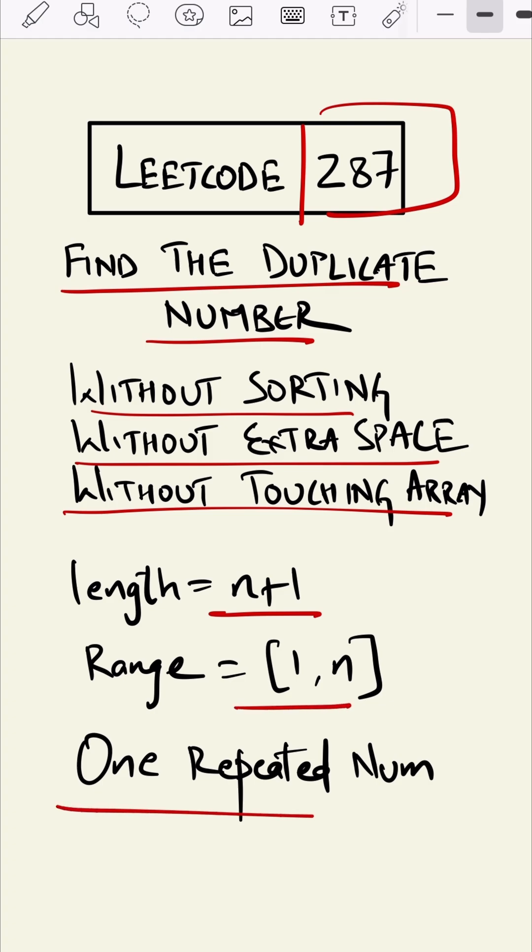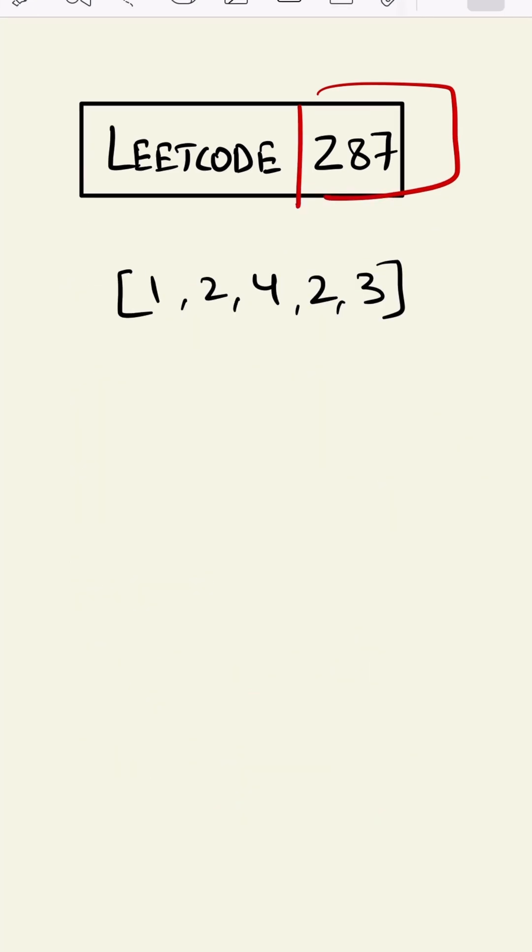Suppose this is our given list and we have to find the duplicate number. We'll traverse it using a linked list, so we'll first define indexes. This is zeroth index, first, second, third, and fourth.